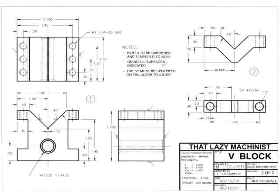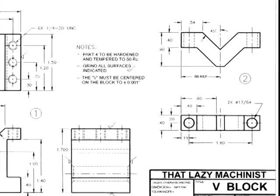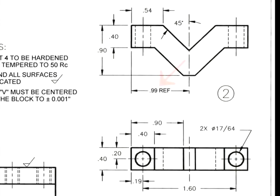For an example of a reference dimension used because of the never-repeat rule, let's look at the clamp detail drawing of our V-block project. The 990 thousandths of an inch dimension is marked as reference using the REF suffix — an older way of indicating a reference dimension, but still widely used.